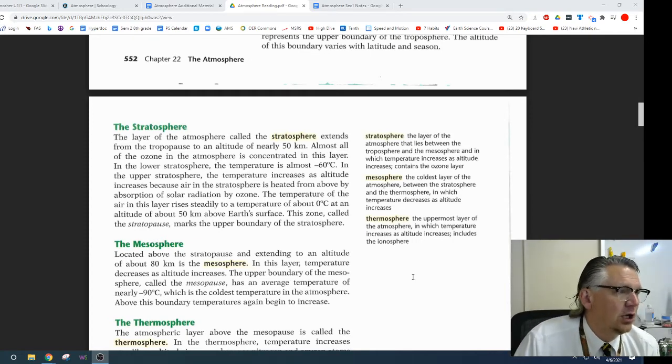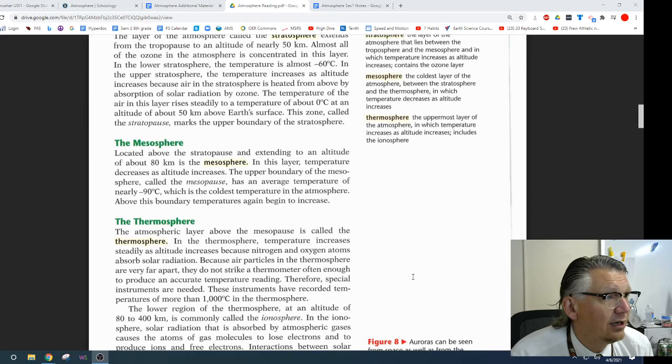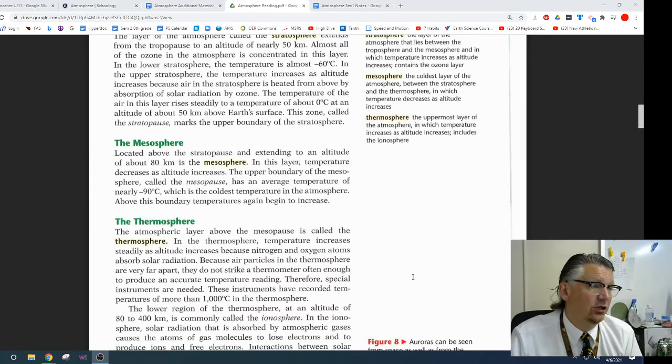The mesosphere. Located above the stratopause and extending to an altitude of about 80 kilometers is the mesosphere. In this layer, the temperature decreases as altitude increases. The upper boundary of the mesosphere is called the mesopause. It has an average temperature of nearly negative 90 degrees Celsius, which is the coldest temperature in the atmosphere. Above this boundary, temperatures begin to increase.